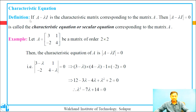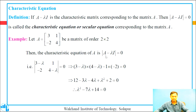Characteristic equation definition. If A minus lambda I is the characteristic matrix corresponding to matrix A, then det(A minus lambda I) equal to 0 is called the characteristic equation or secular equation corresponding to matrix A. Let us take an example: let A equal first row [3, 1], second row [-2, 4] be a matrix of order 2 by 2. Then the characteristic equation of A is det(A minus lambda I) equal to 0, that is, subtract lambda from the diagonal elements of A.